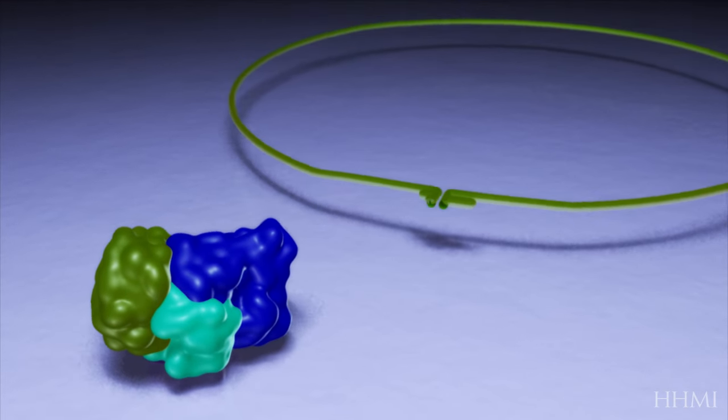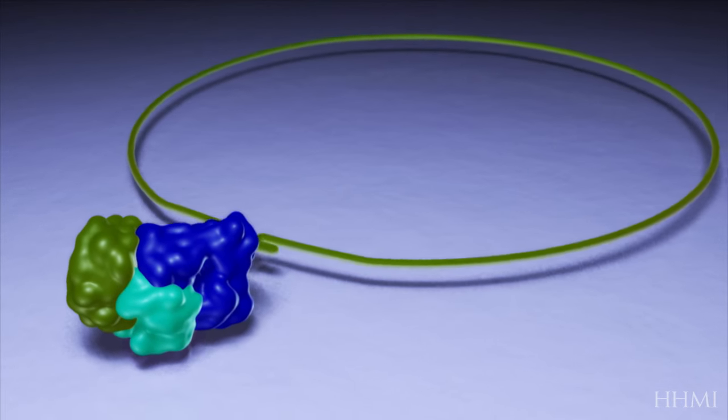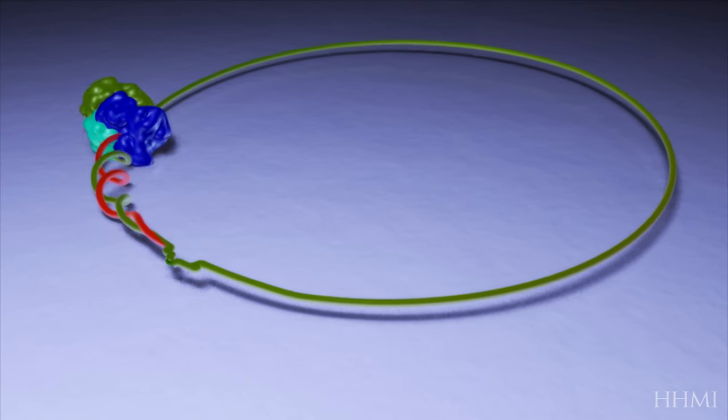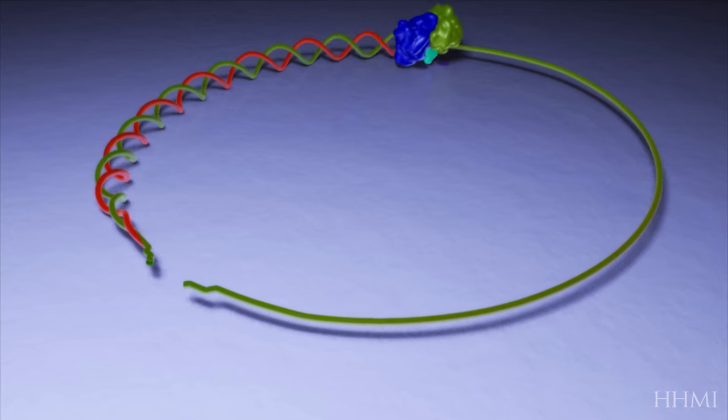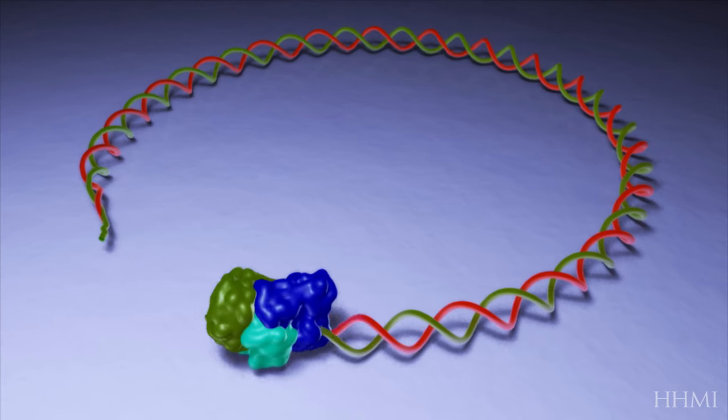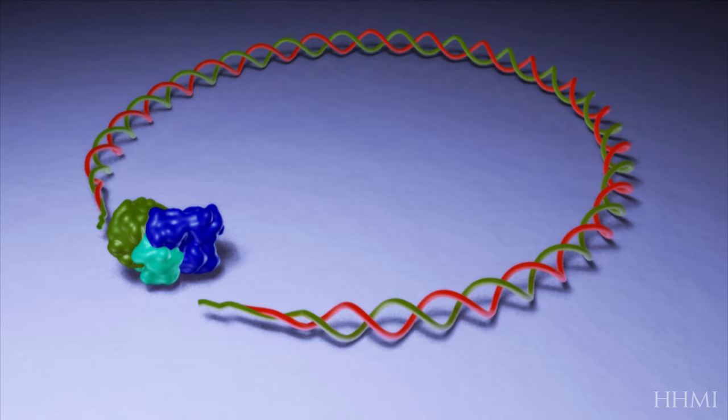The RNA then attaches to the replication complex to start the first round of synthesis. Using the virus's positive-sense RNA as the template, a negative-sense copy is made. The pair of RNA strands forms a double helix.